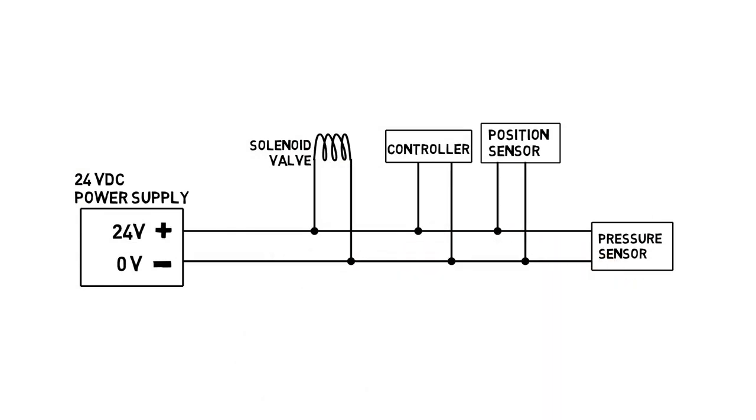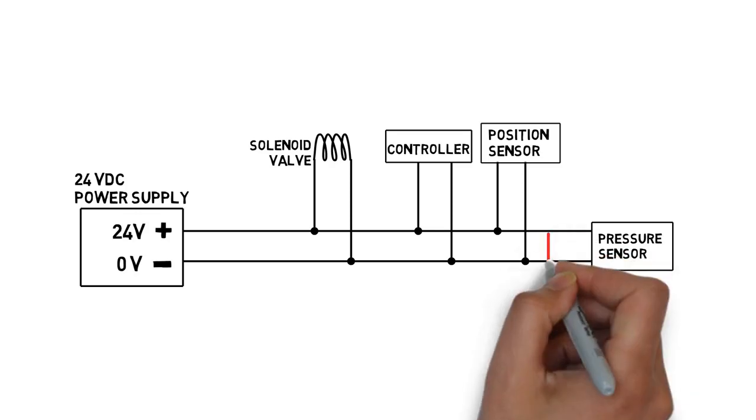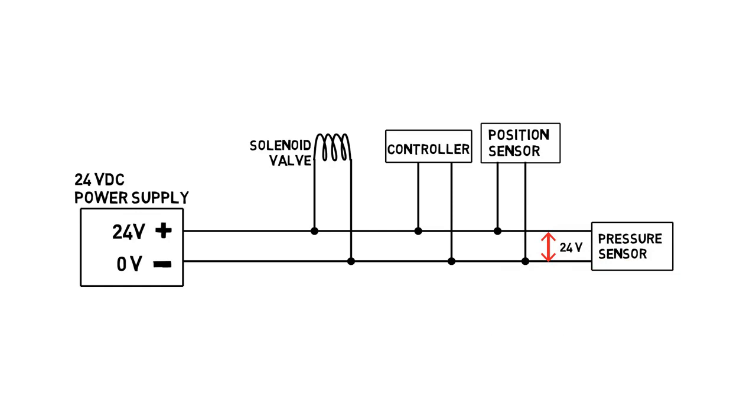Anyone with basic electronics knowledge knows that the wire connected to the plus output is 24 volts relative to the wire connected to the minus output, which is sometimes called ground common or zero reference. However, that is actually wrong.